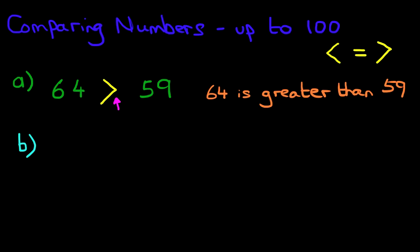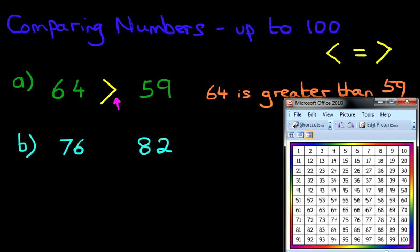Let's have a look at one more example. Now let's suppose you have the number 76 and the number 82. So which of the symbols goes between these two numbers for it to make sense? Now again, we're going to look at the number grid. Now the same method as before, I want you to start and find the first number 76. Put your finger on number 76. Now I want you to find number 82. You found it? Good.